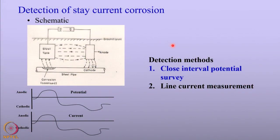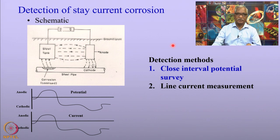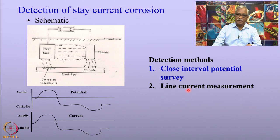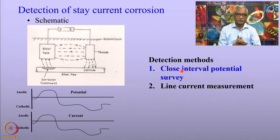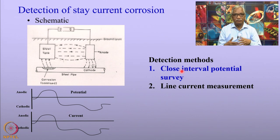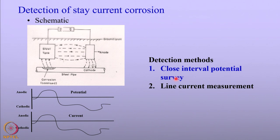Now let us move on to the important topic of detection of stray current corrosion. Recalling from a previous lecture on surveys to find out how underground pipelines suffer corrosion, we use two techniques: one is called close interval potential survey, and the other is line current measurements. We will see how these two techniques can be used to detect the location where buried structures suffer stray current corrosion. Please note that these are buried structures, not possible to inspect by visual means.